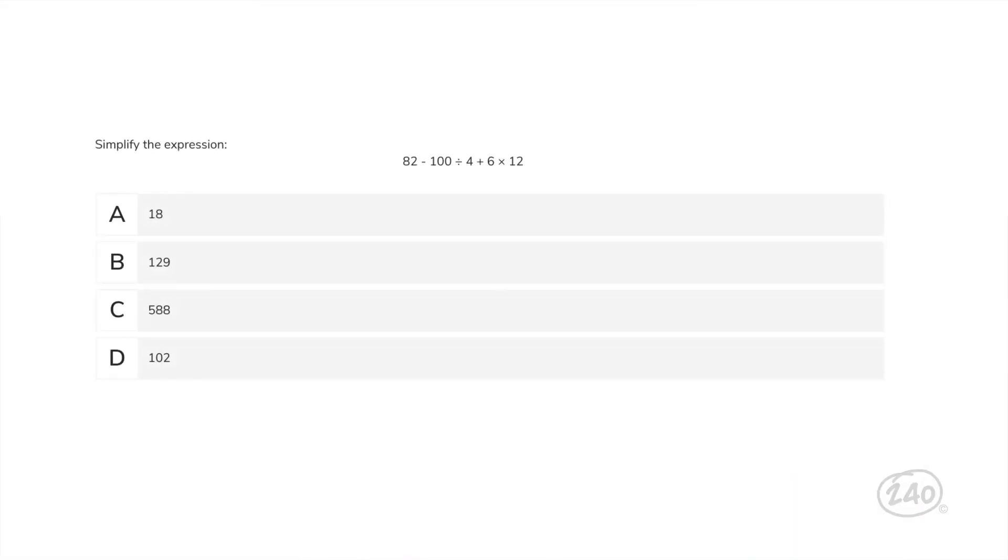Remember the numbers and operations section we talked about earlier? We're going to need to know the order of operations. Let's look at how this is reflected in a question. Simplify this expression. 82 minus 100 divided by 4 plus 6 times 12. All right, kind of complicated, but let's start to run through PEMDAS. There are no parentheses or exponents in this expression, so we can skip those steps.